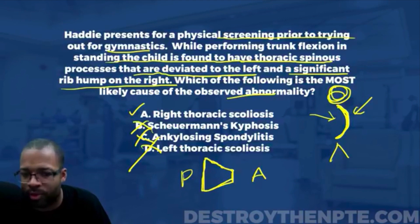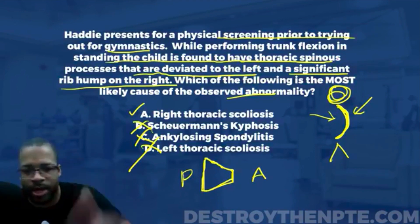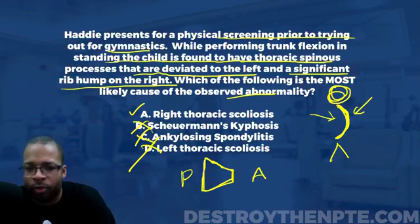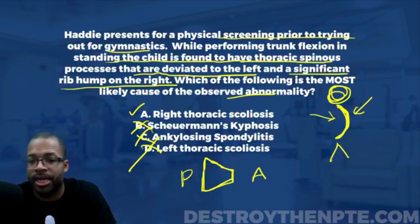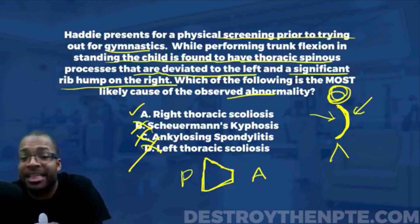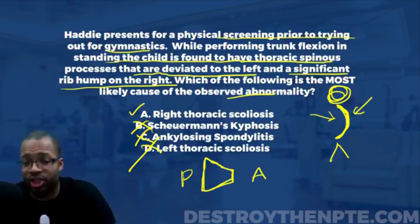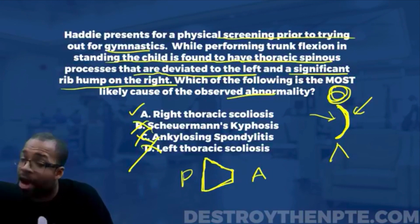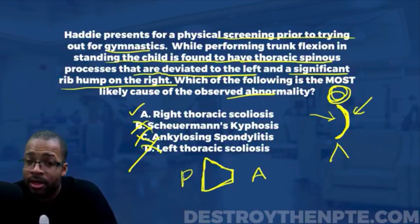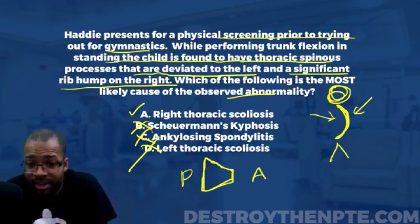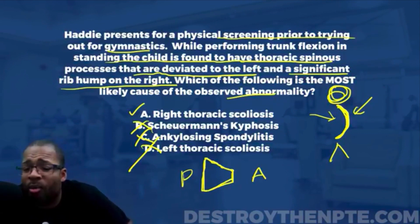That leaves us with the final answer: A — right thoracic scoliosis. Congratulations to everyone who got this correct. If you didn't, you may not have remembered how thoracic scoliosis is named — a right convexity means right thoracic scoliosis. Also, a test-taking strategy: the screening described — having the patient bend over while trying out for gymnastics — should already lead you to scoliosis, eliminating B and C immediately.